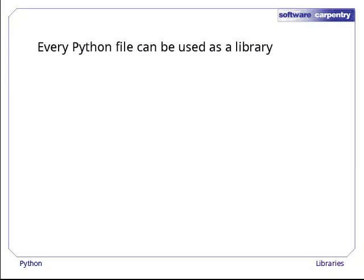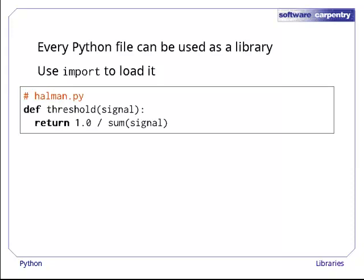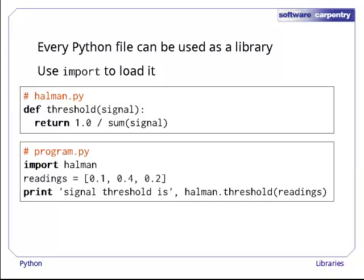Every Python file can be used as a library by other programs. To load it into memory, use the import statement. For example, suppose we have created a Python file called Holman.py that defines a single function called threshold. If we want to call this function in another file, we write import Helman to load the contents of Helman.py and then call the function as Helman.threshold. When we run program.py, it does the right thing.